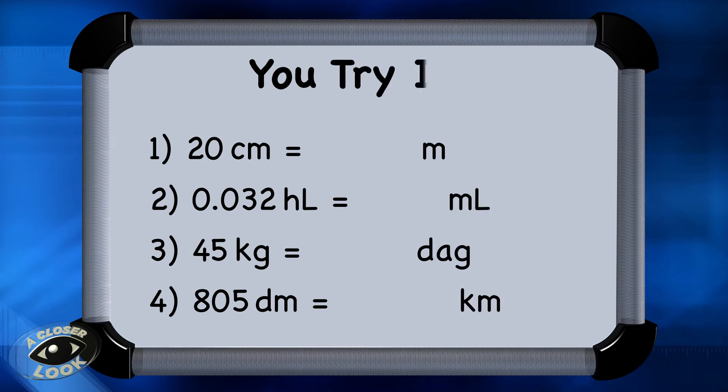Now, here are some problems for you to try. When you're ready, you can press pause and write these problems down, and then do the conversions, remembering your King Henry died by drinking chocolate milk chart. When you're finished, press play, and we'll go over the solutions.